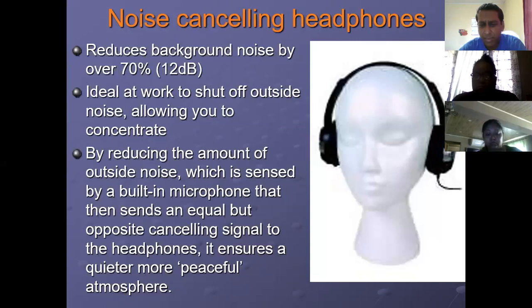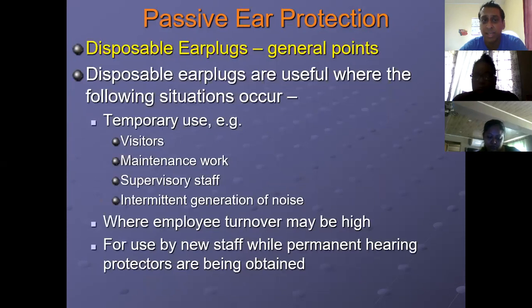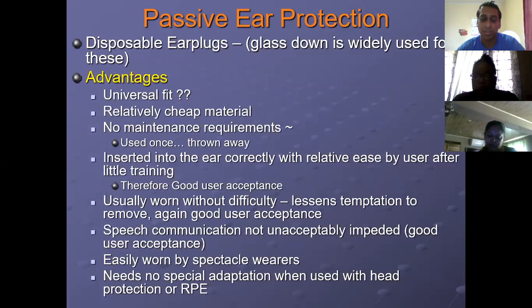To me there was nothing there other than what people already know - earplugs, disposable, reusable. It's a nice read, and it all just talks about one form of control, which is earplugs and ear defenders. You see passive ear protection on top - there's actually something called active and passive ear protection, where active protection cancels out the noise.